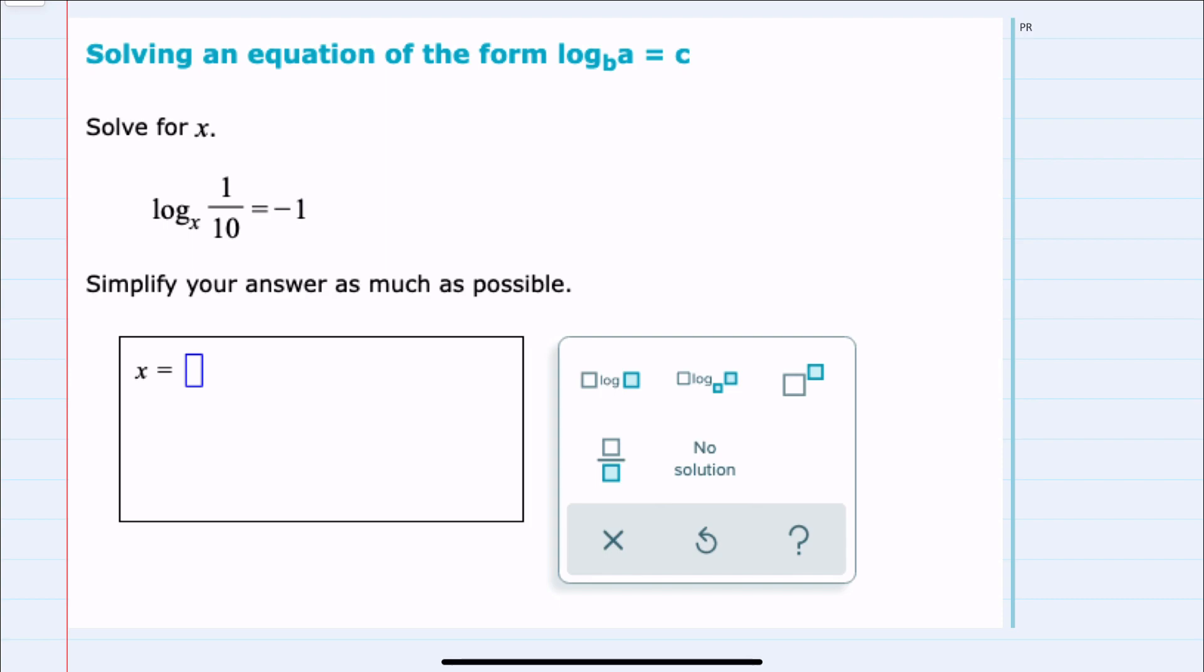Our strategy is going to be to write this logarithmic equation as exponential. So if I'm writing this as exponential, the base of the logarithm will be the base of the exponent. What the logarithm is equal to will be the exponent. And the other side of the exponential equation is what we are taking the logarithm of, which is one-tenth.